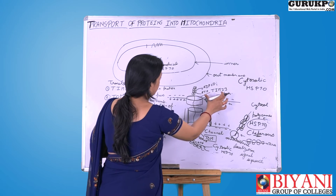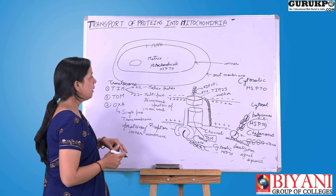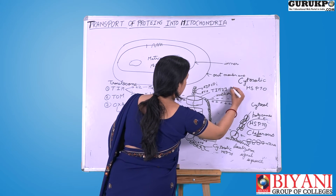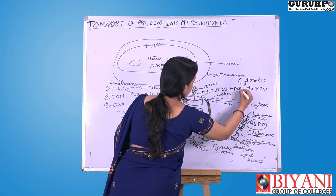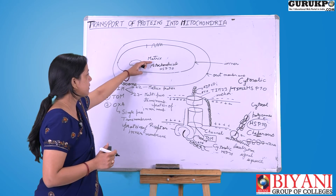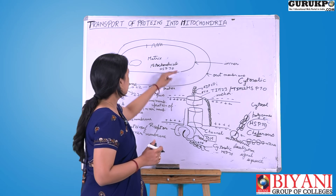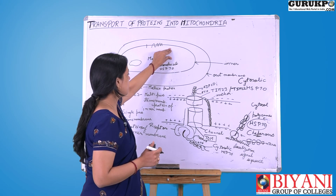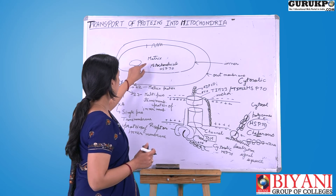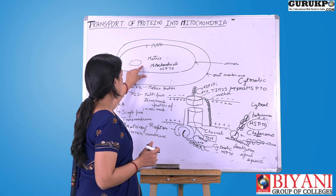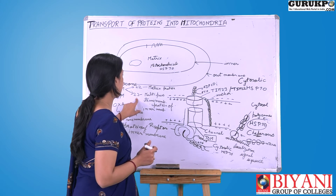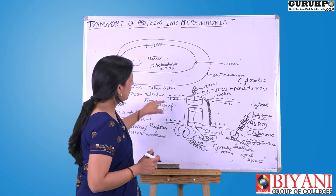Once the protein is transported through the outer membrane, it is then transported to TIM23 or TIM22 in the inner mitochondrial membrane. TIM22 is for transport of proteins meant for the matrix. Proteins meant to reside in the inner mitochondrial membrane as multipass transmembrane proteins are transported by TIM23.